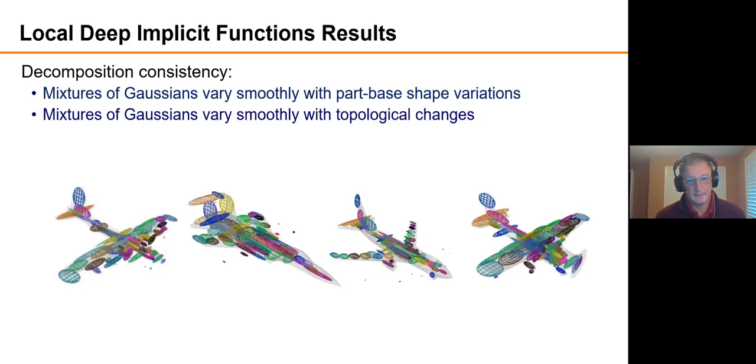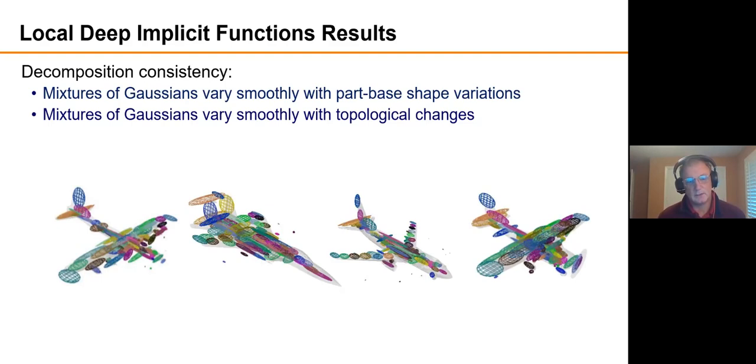So those are all very cool things, but I think the coolest part of this is that the encoder that learns the mixture of Gaussians and places the Gaussians and their size learns to produce Gaussians that are consistent across shapes within the same category. So these are different airplanes with pretty radically different shapes. But if you look at, let's say this teal shaped thing here at the edge of the wing, I don't know if you can see my mouse.